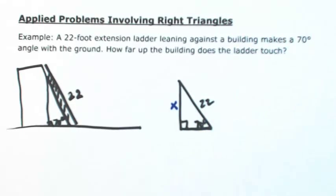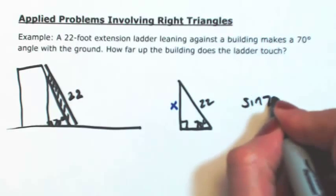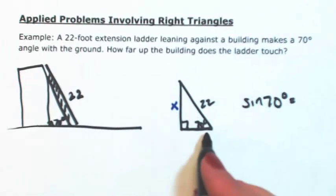So opposite, hypotenuse, it involves the sine. So the sine of 70 degrees, opposite over hypotenuse.